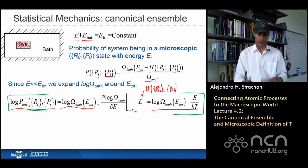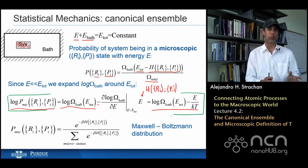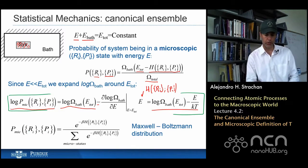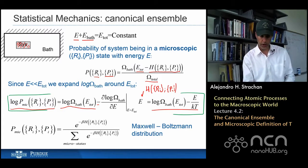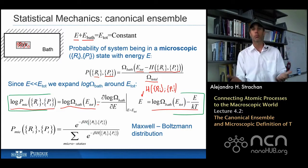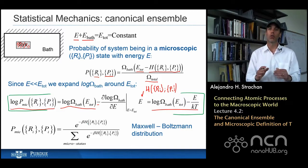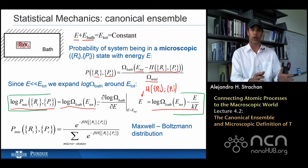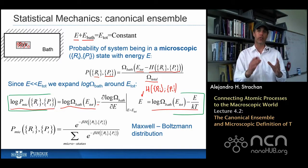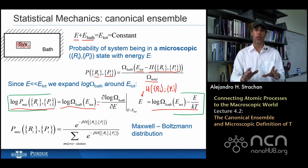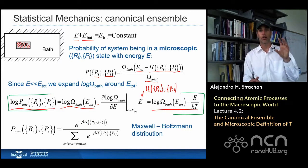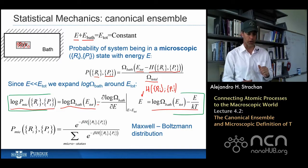Now I have a relationship between the log of the microscopic probability and the energy of my system. Inverting the log, the microscopic probability of finding my system in a state given by R sub i, P sub i is proportional to e to the negative beta — 1 over kT — times the energy of that state. That's the Maxwell-Boltzmann distribution. Starting from the microcanonical ensemble and the equal probability postulate, we can derive that a system in contact with the heat bath will have this Maxwell-Boltzmann distribution.